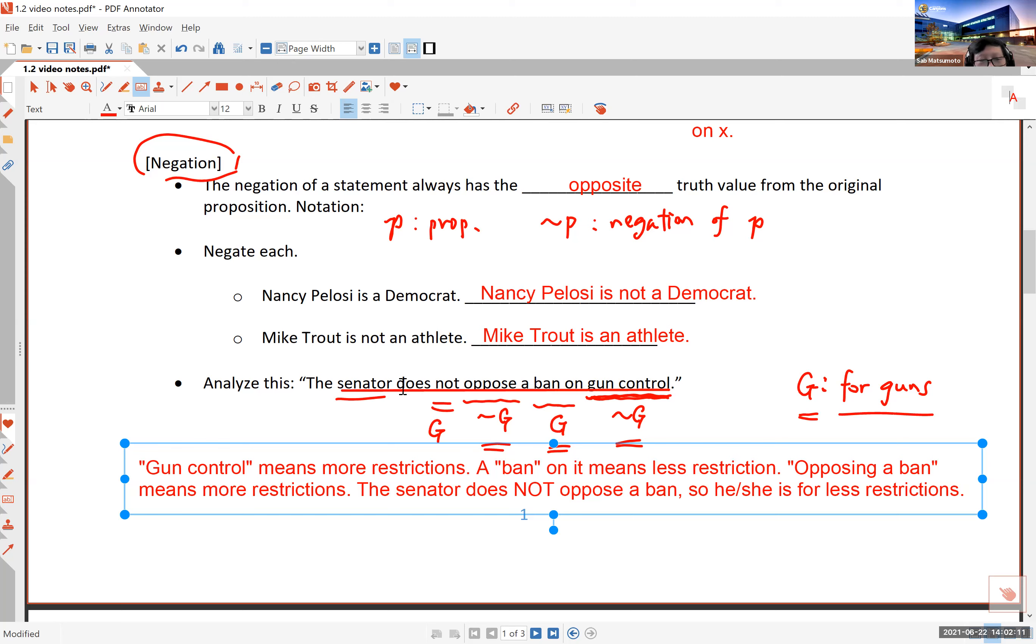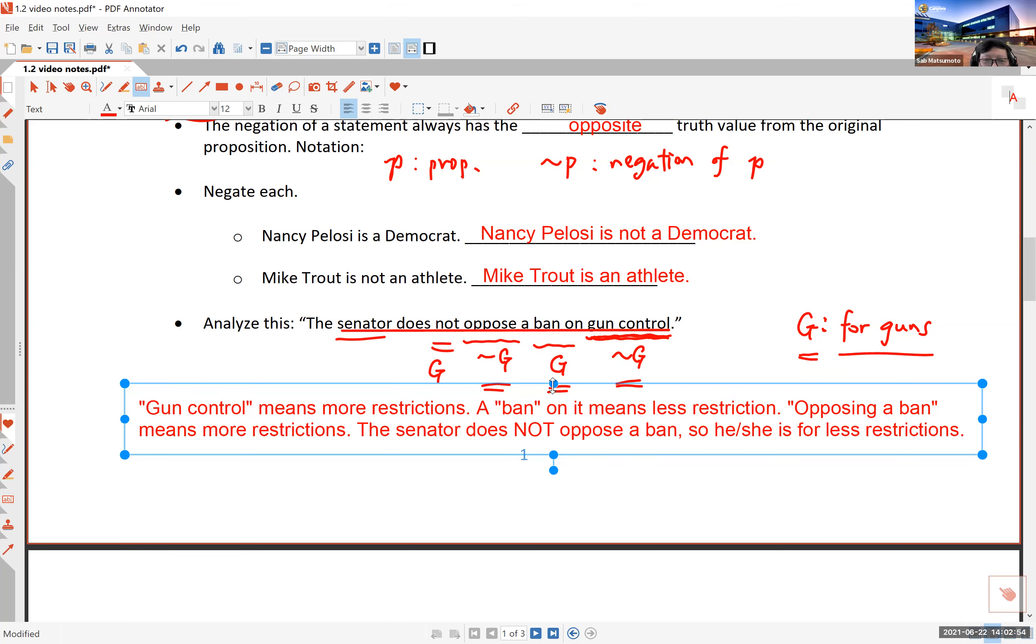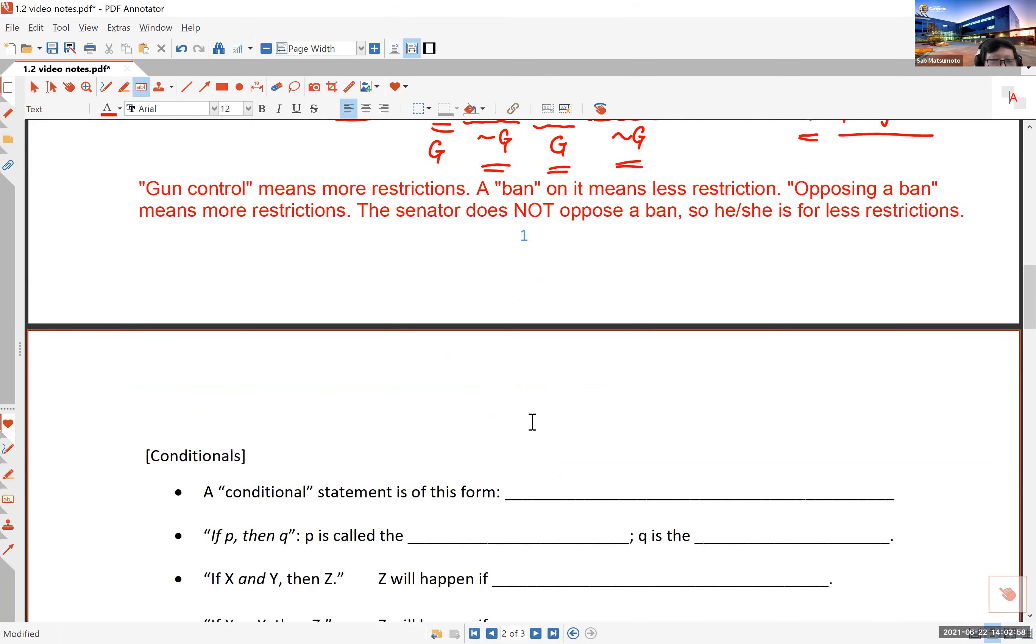So another way to think about this is to say that does not oppose is pretty similar to support. So this senator supports a ban on gun control. Gun control means people trying to limit the use of or sale of guns. And so a ban on that is to say, hey, let's just get rid of all the restrictions on guns. And so the senator sort of supports, does not oppose at least, a ban on that. So the senator is probably for the Second Amendment or for the use and the possession of guns and believes in less restrictions. It is, it's complicated. So if you stop and think about this, then you may have to spend a few minutes thinking about this before we go any further.